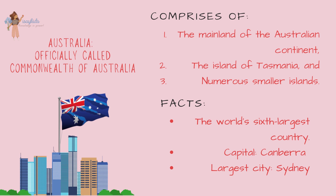The country is officially called the Commonwealth of Australia. It comprises the mainland of the Australian continent, the island of Tasmania, and numerous smaller islands.